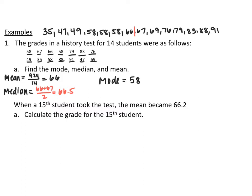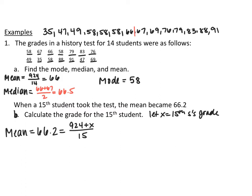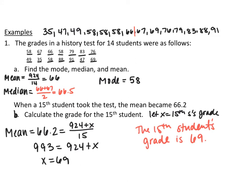A 15th student took the test and the mean became 66.2. We want to calculate that student's grade. Pause the video and try this. I set it up as: 66.2 equals the sum of all data points divided by 15 students. Letting X be the 15th student's grade, the sum of the existing points is 924, so (924 + X) / 15 = 66.2. Multiplying both sides by 15 gives 993 = 924 + X, so X = 69. You can use how you calculate the mean — or even a median or mode — to help find missing data points.